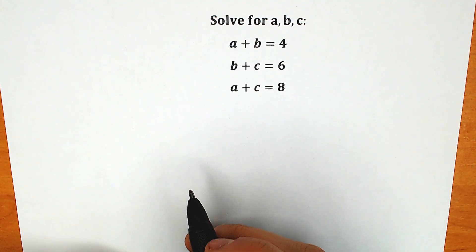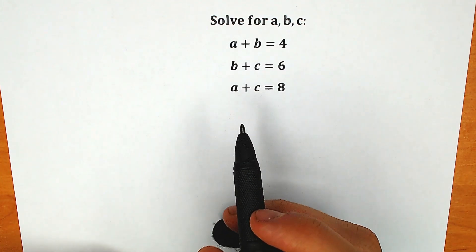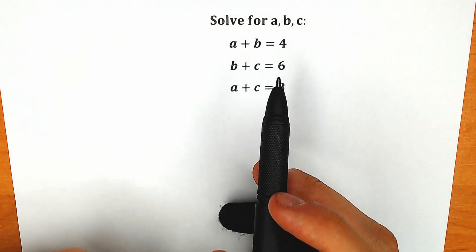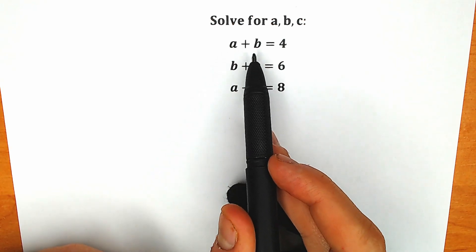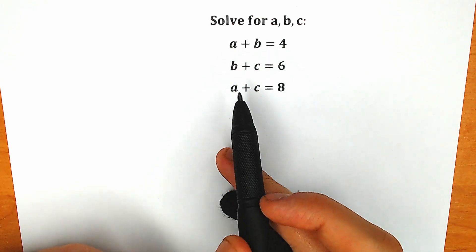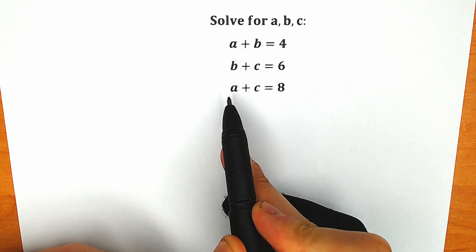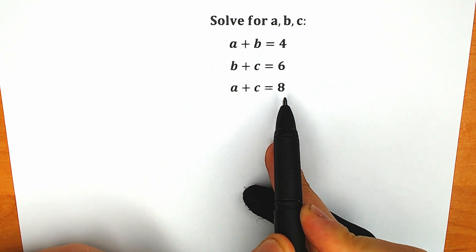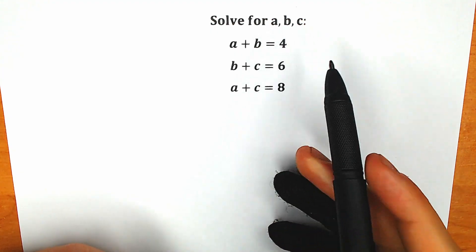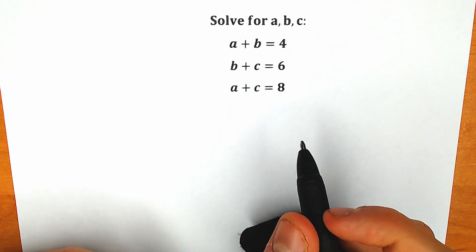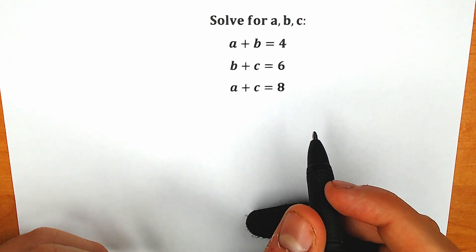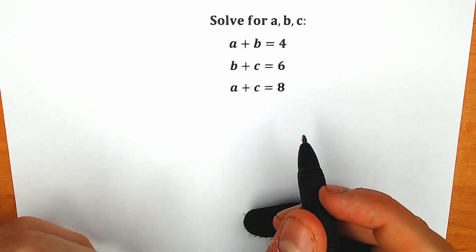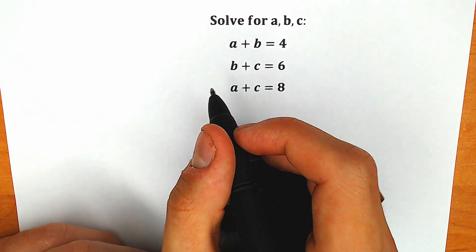Hello everyone, happy to see you here. Welcome back to my channel, Hi Mathematics. Today we have a very interesting, quick and relaxing algebra question. We know that a plus b equals 4, b plus c equals 6, a plus c equals 8, and we need to solve for a, b, and c. If you have your answer, you can write your solution in the comments below. I'm going to show you three of the best and quickest methods to solve this question.